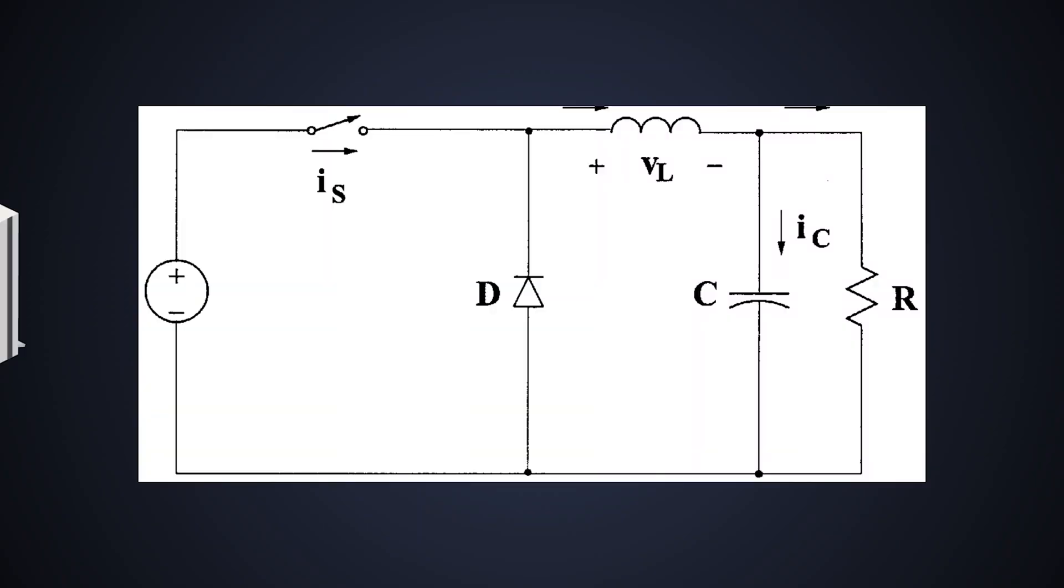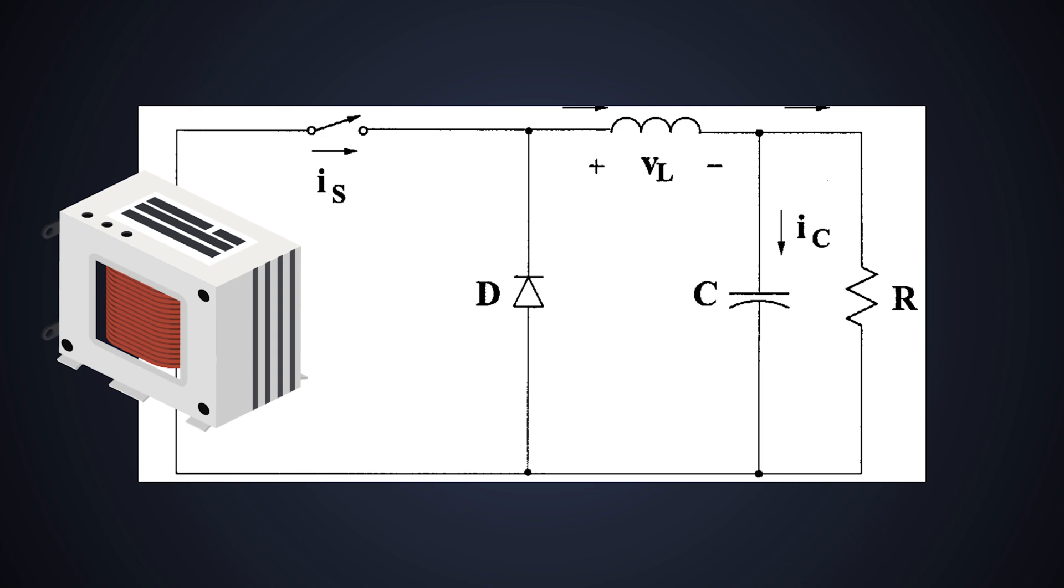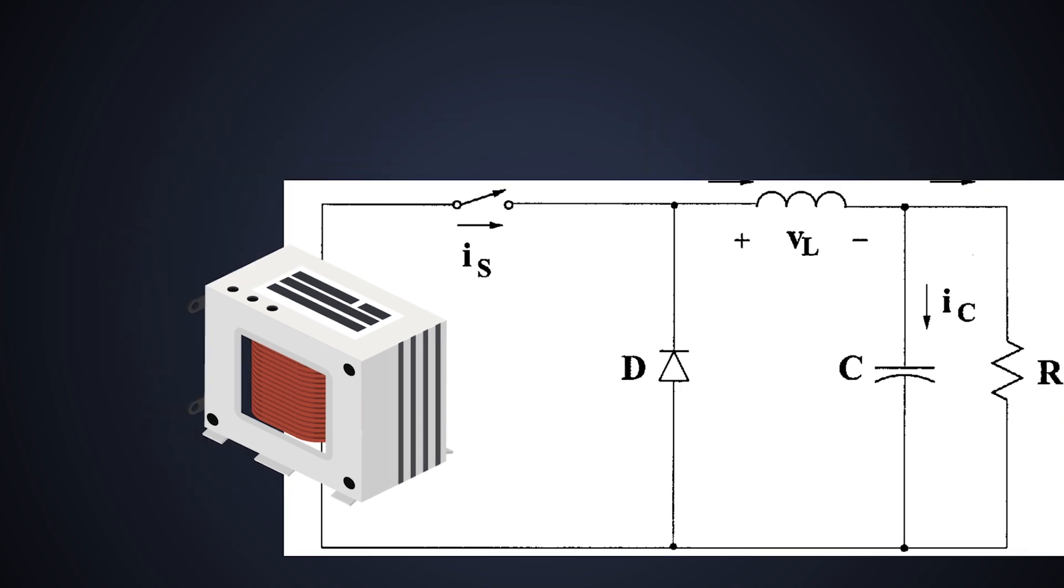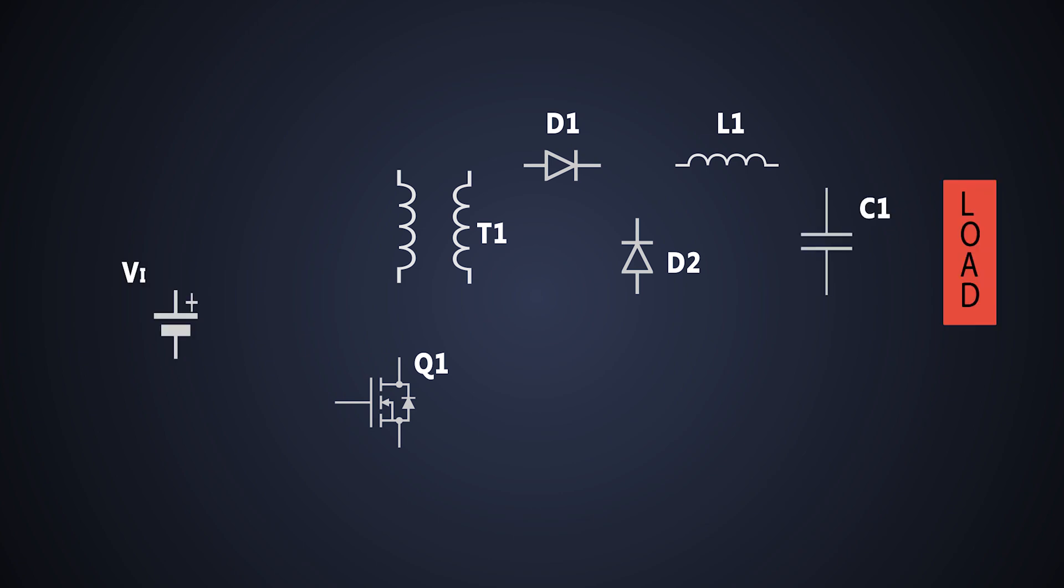The forward converter is basically a buck converter with a transformer inserted in between. The forward converter consists of a MOSFET, two diodes, a transformer, inductor and an output capacitor. The construction of the forward converter is like this.